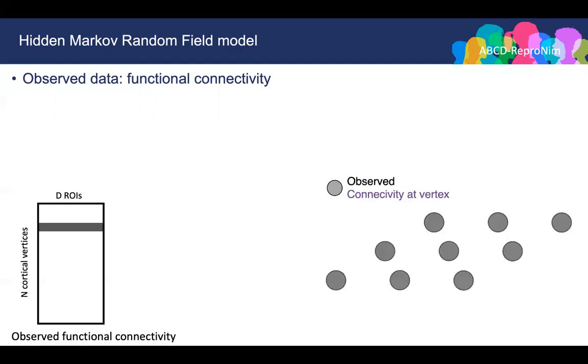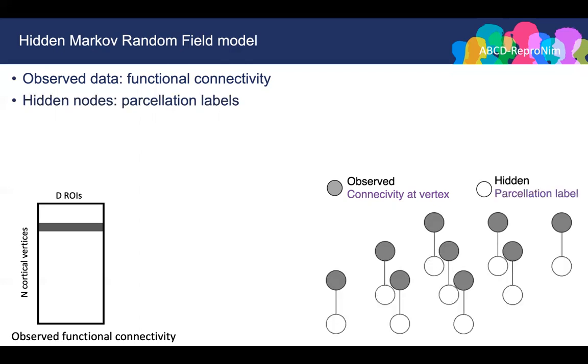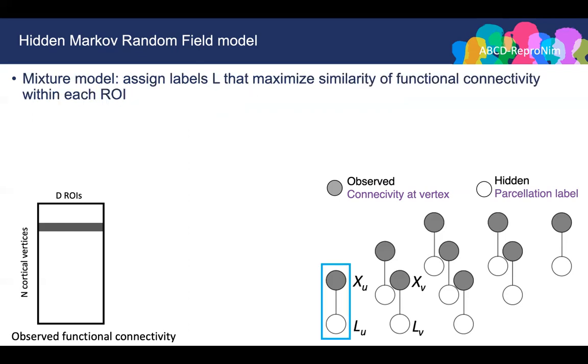We can use the hidden Markov random field model to parcellate the cerebral cortex of individual subjects with observed functional connectivity. For each vertex, we compute the functional connectivity with ROIs. In the graphical model, the observed nodes shown as gray circles correspond to the observed functional connectivity. For each observed node, we have one hidden node shown as a white circle. The hidden nodes correspond to the unknown parcellation labels. We can use a mixture model to assign labels L — this is a likelihood term — which maximizes functional connectivity similarity within each ROI.